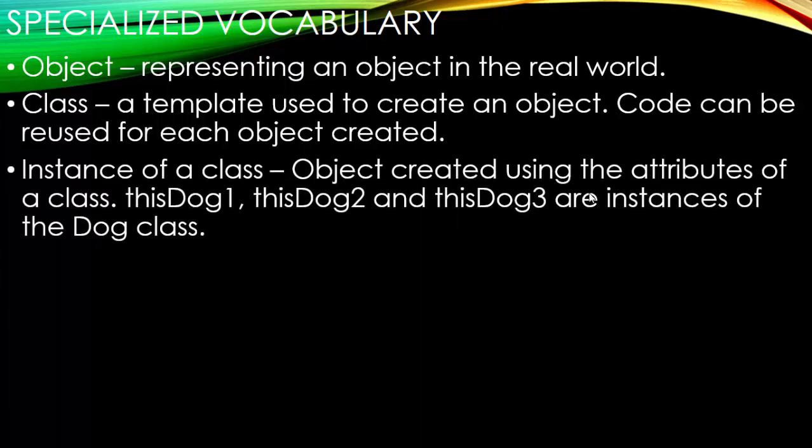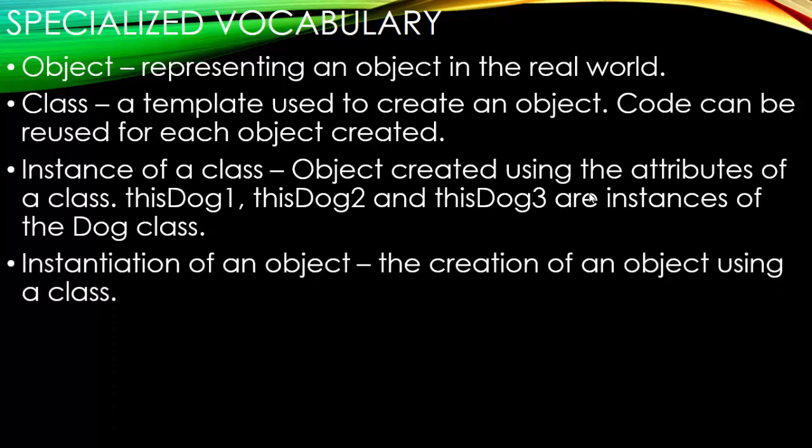Then we have people talk about an instance of a class. Well, if you're new to object-oriented programming or programming in general, you may not know what that means. That just means an object creating using the attributes of a specific class. It's the instance or object created from a class. So in our example, this dog one, this dog two, and this dog three, those are instances of the dog class.